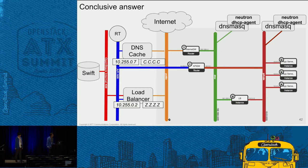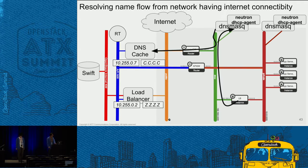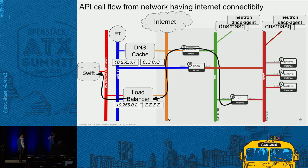Now I'll introduce the conclusive answer, which we are actually operating. This diagram is more simple than what we showed at first. I'll explain the API call flow from the DMZ and private network. First, let's check the flow from DMZ network. The VM accesses DNS masq to resolve the domain, and DNS masq forwards it to the DNS cache, so we can resolve the domain name. Once the VM knows the endpoint IP, it accesses the load balancer via the public network. So we can call API in this way — it's simple.